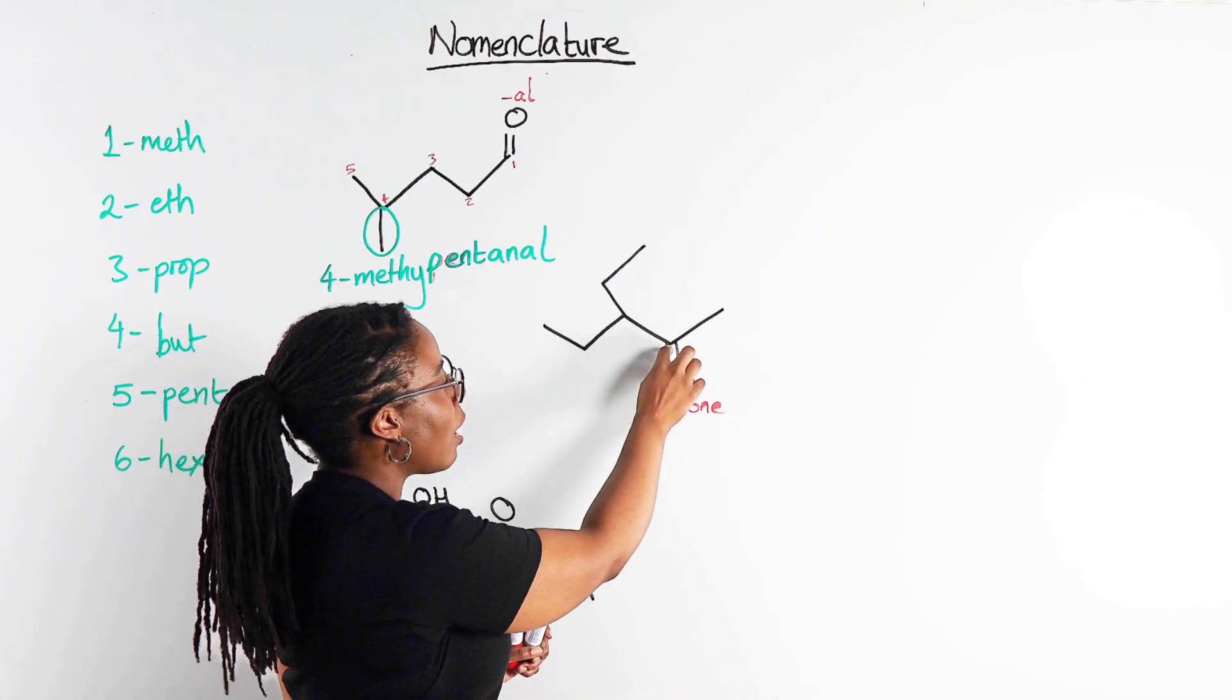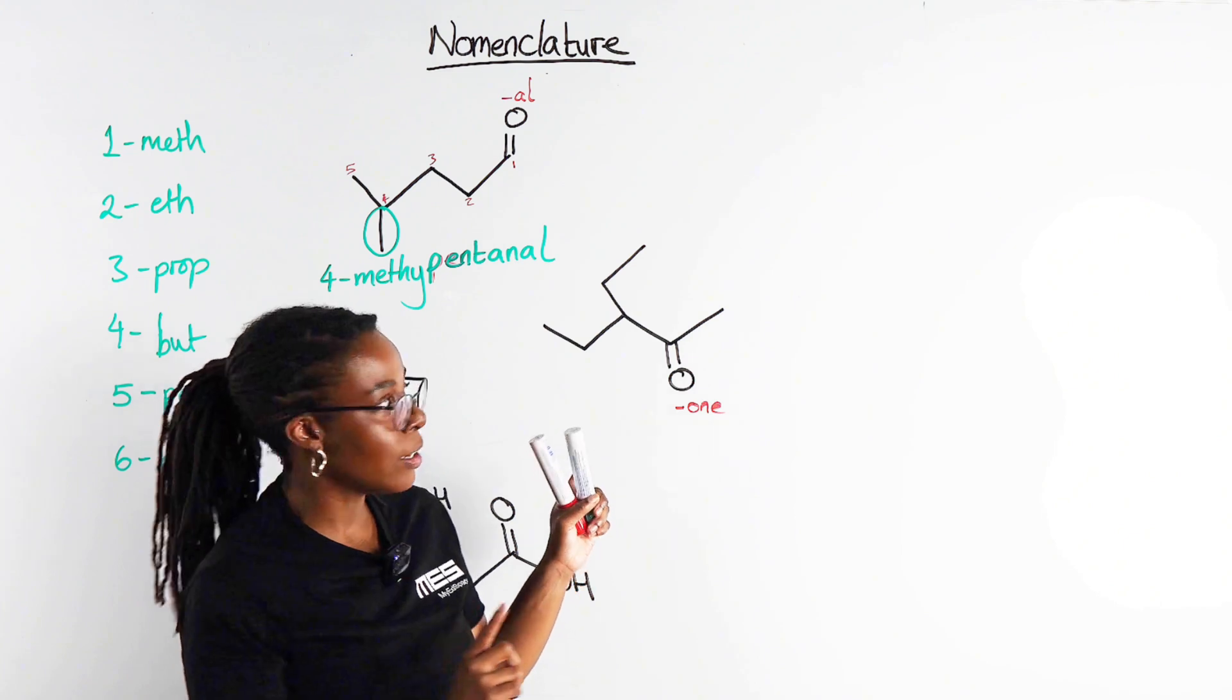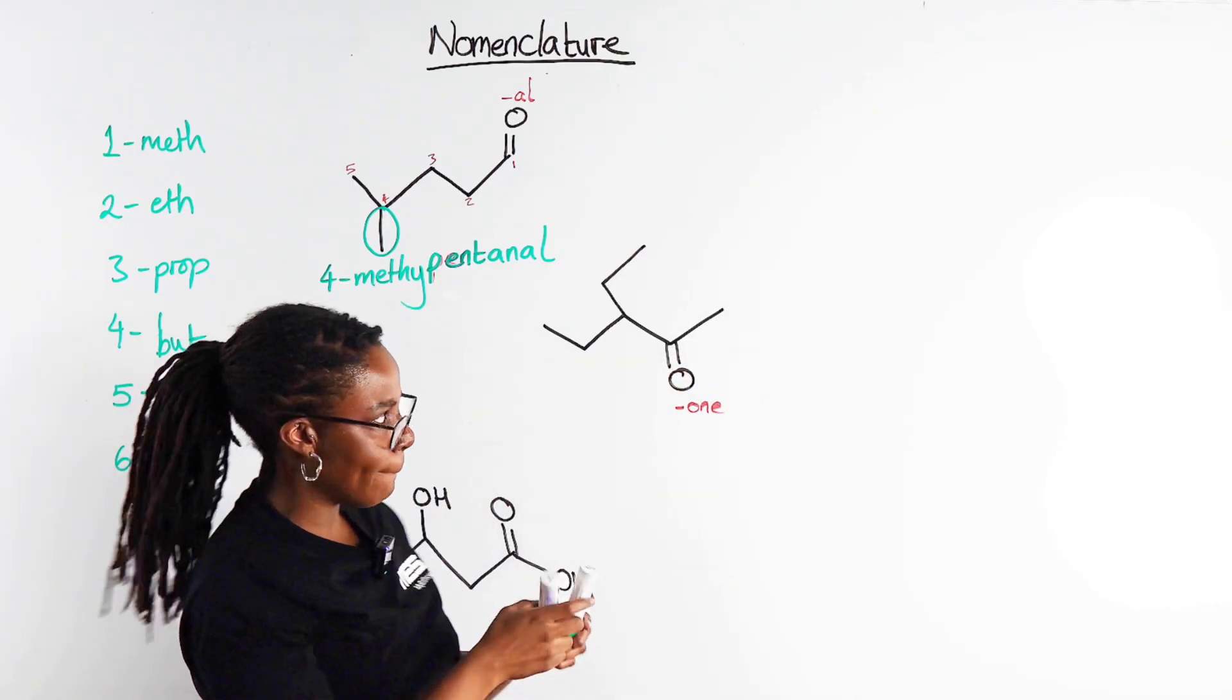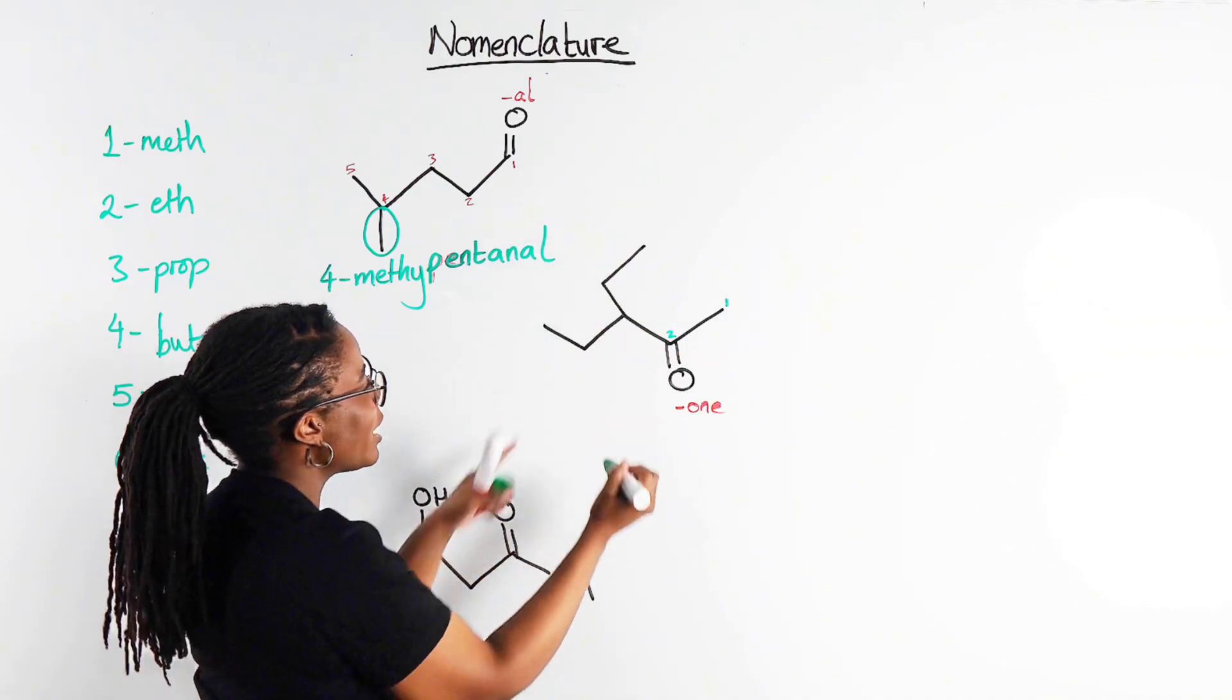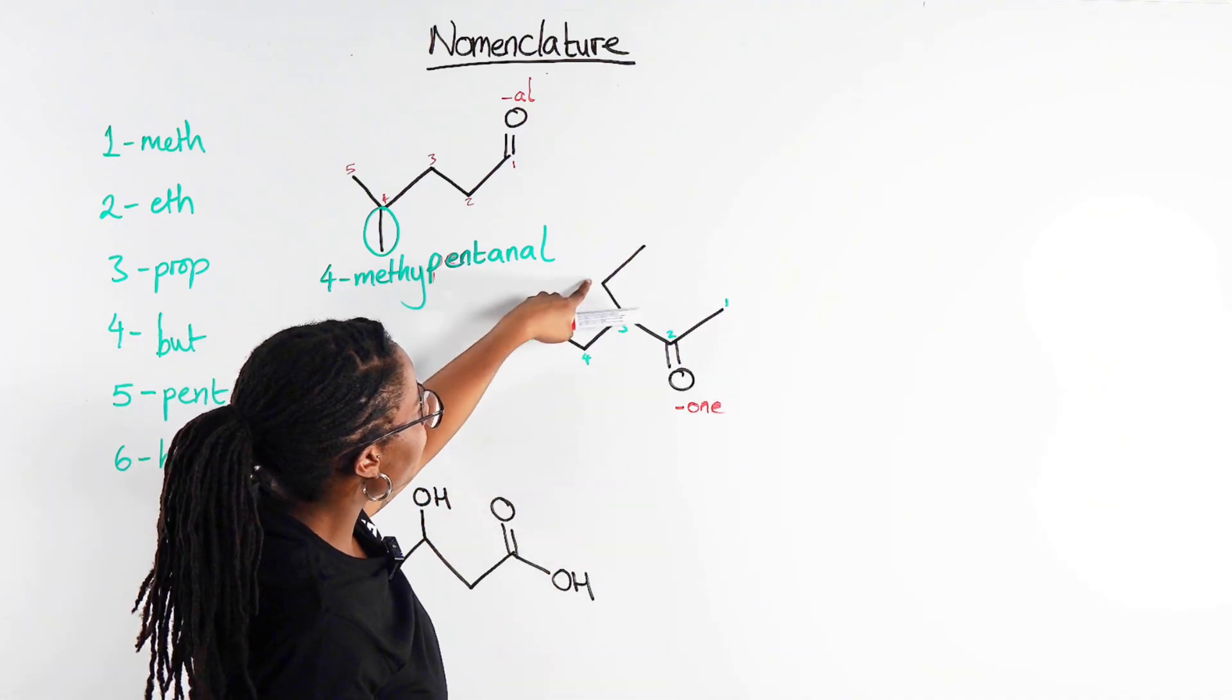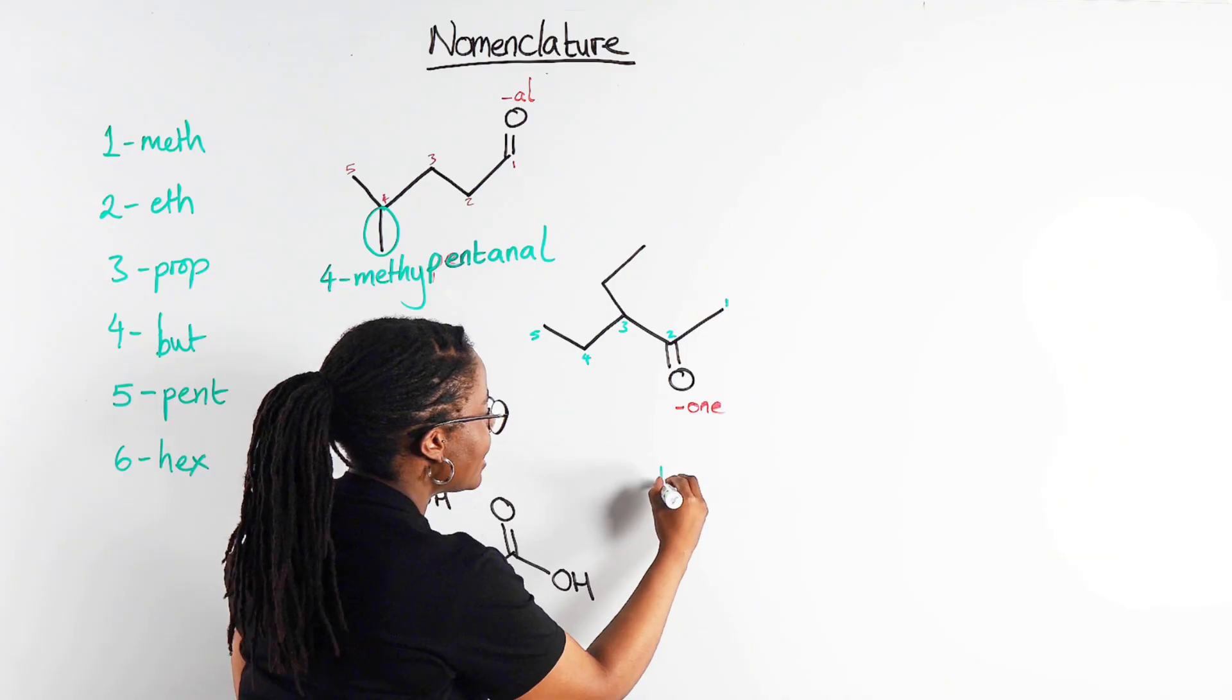For now let's focus on just the naming principles. So we've got our -one. Again we want to start counting making sure that this carbon has got the smallest possible number. So which end of the chain are we going to start counting at? Well we're going to start counting at this carbon so on the right hand side so that our ketone group has got the smaller number. So that would be carbon one, two, and then we've got a choice but these are both the same number of carbon.